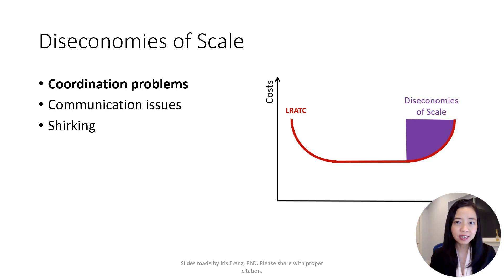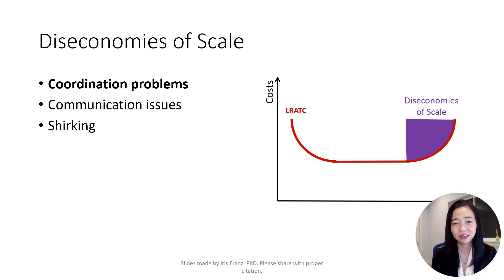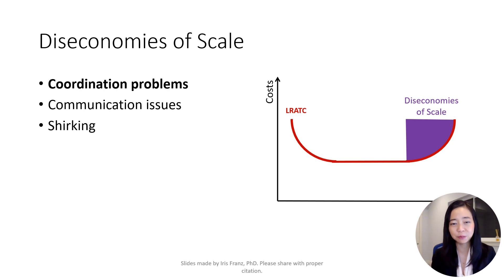There are several reasons for diseconomies of scale. First, large firms have many departments, sometimes located in different regions or even different continents. This makes coordination among departments challenging, which increases the cost.